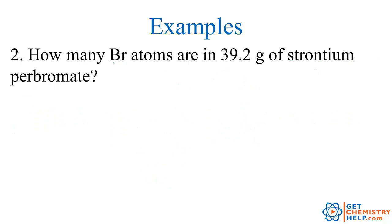Example 2: How many bromine atoms are in 39.2 grams of strontium perbromate? I'm turning mass of strontium perbromate into atoms of bromine, so we start with 39.2 grams. Strontium perbromate has the formula Sr(BrO4)2. Since I'm in mass, the only thing I can really do is molar mass, so let's find the molar mass of strontium perbromate.